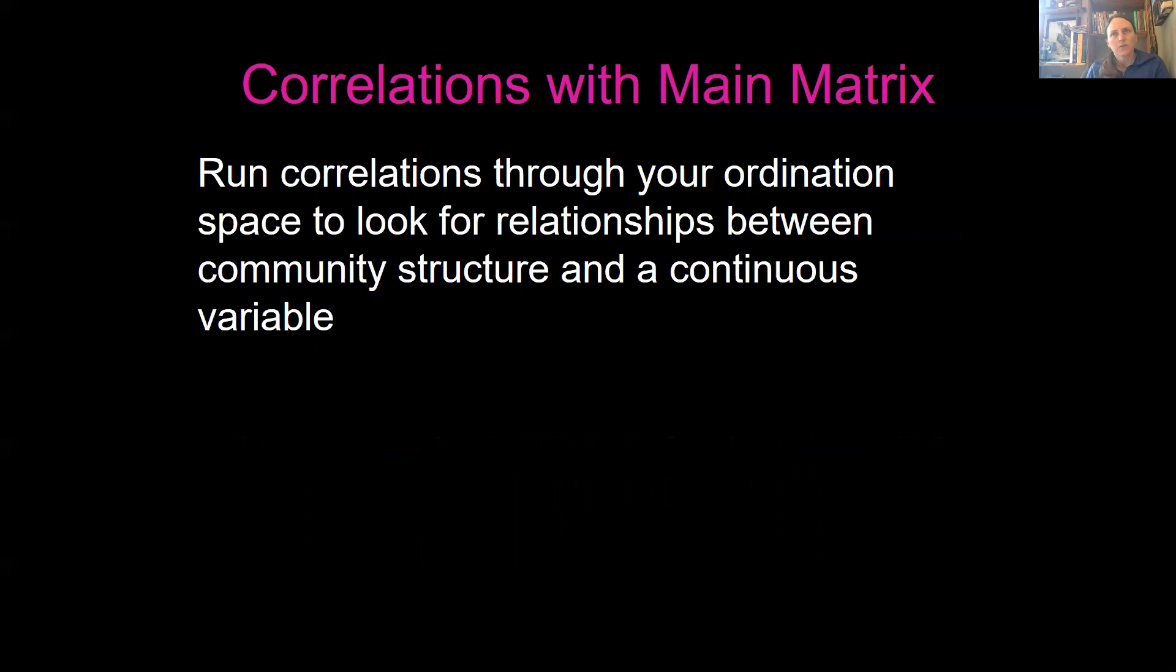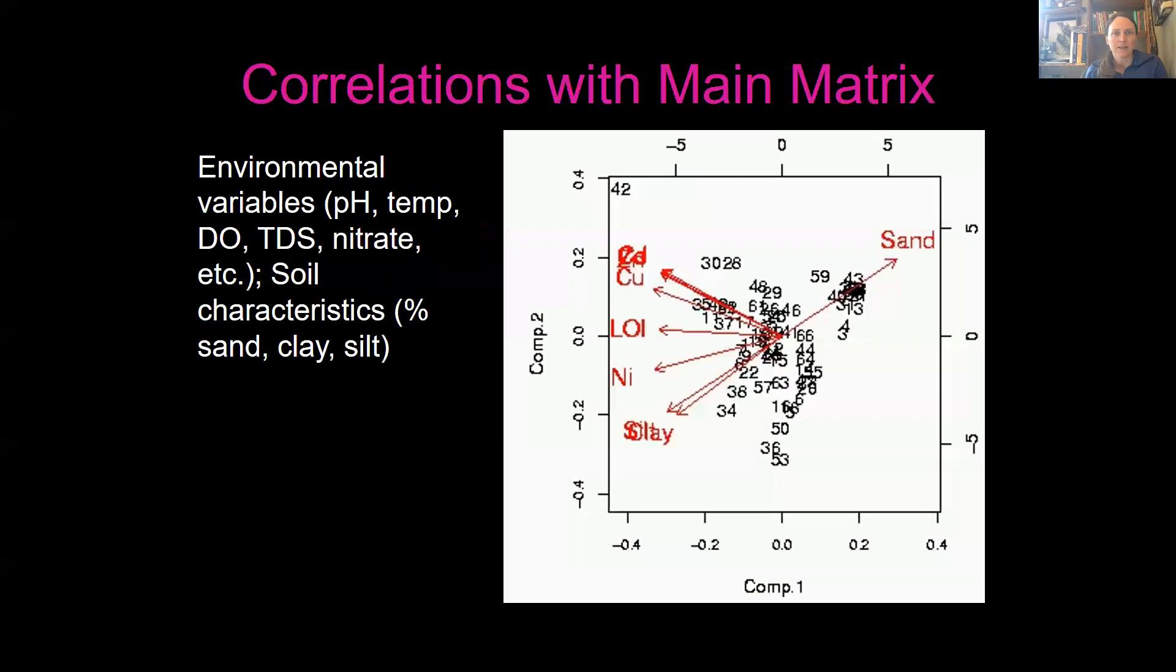So one thing that's really neat is that once you have this ordination, you can run environmental variables through ordination space looking for correlations with community similarity. You learned about correlations already, and you can imagine what that might be like. Here you can see an example where heading in this direction, these communities were more sandy, from environments that were more sandy. Going in this direction, you have communities that were more silty and clay-like. And going in this direction, you have communities that had higher copper, zinc, and other elements. So you can look for environmental variables to correlate with your ordinations, which is a really neat option.